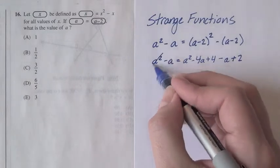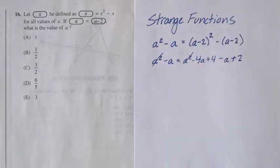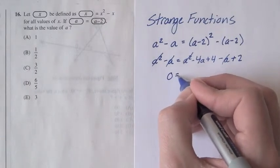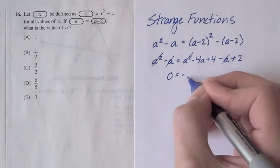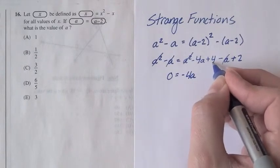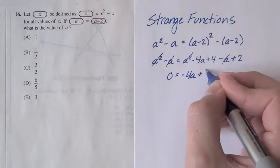We can cancel things out on both sides. We have an a squared on both sides, that's out. We have a minus a on both sides and that's out. So we're left with 0 over here is equal to negative 4a. Then we have a plus 4 and a plus 2, so that becomes plus 6.